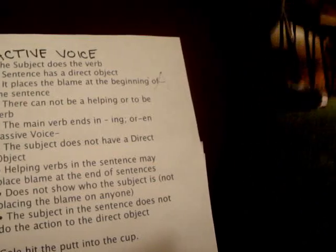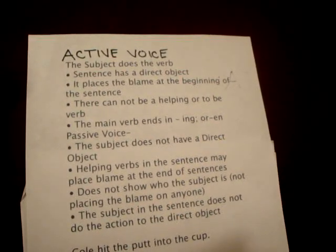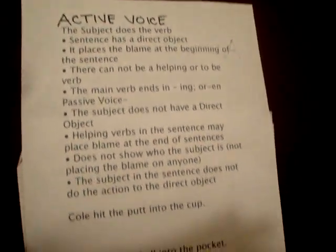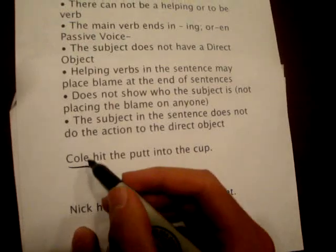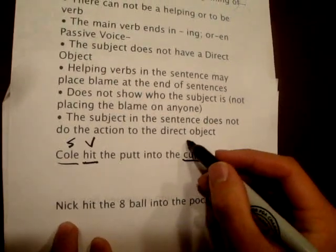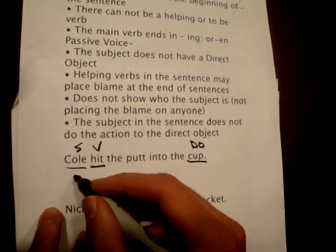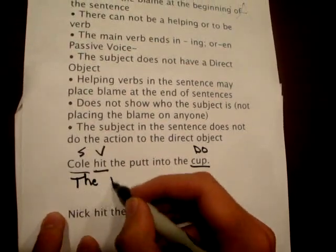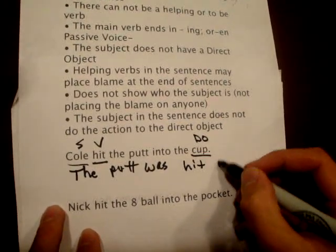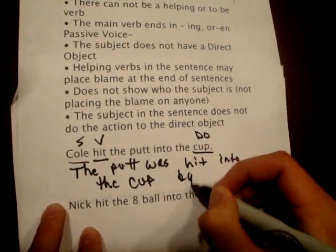The difference between active and passive voice is: active voice does the action while passive voice receives the action. In this sentence, 'Cole hit the putt into the cup' — Cole is the subject, hit is the verb, and cup is the direct object. To change it to passive voice, you would write it as 'The putt was hit into the cup by Cole.'